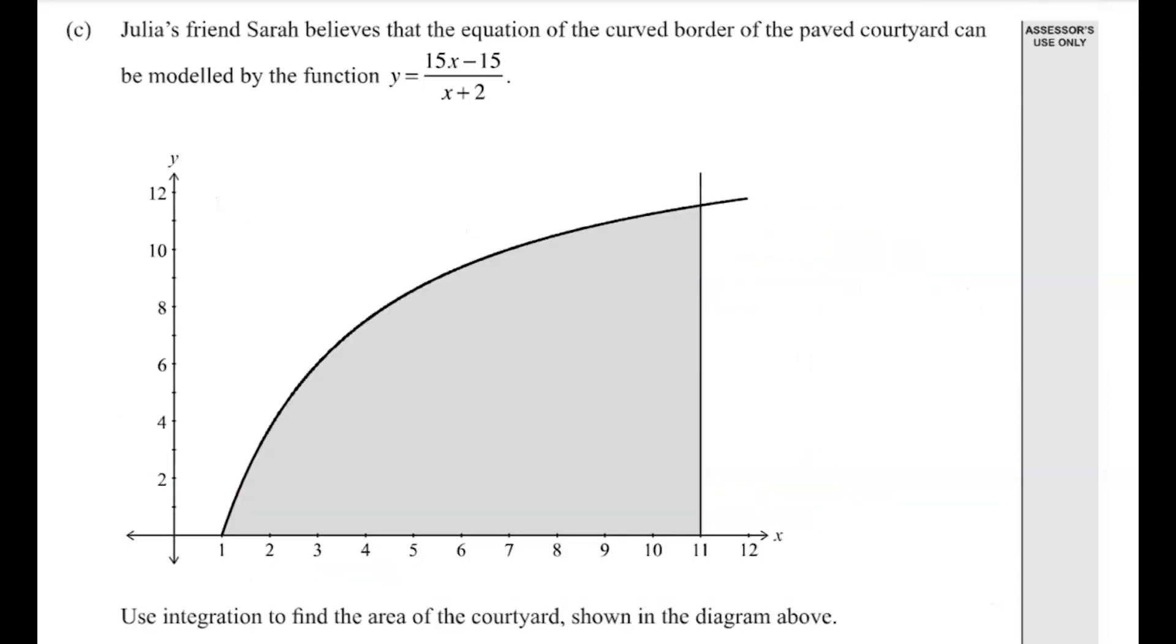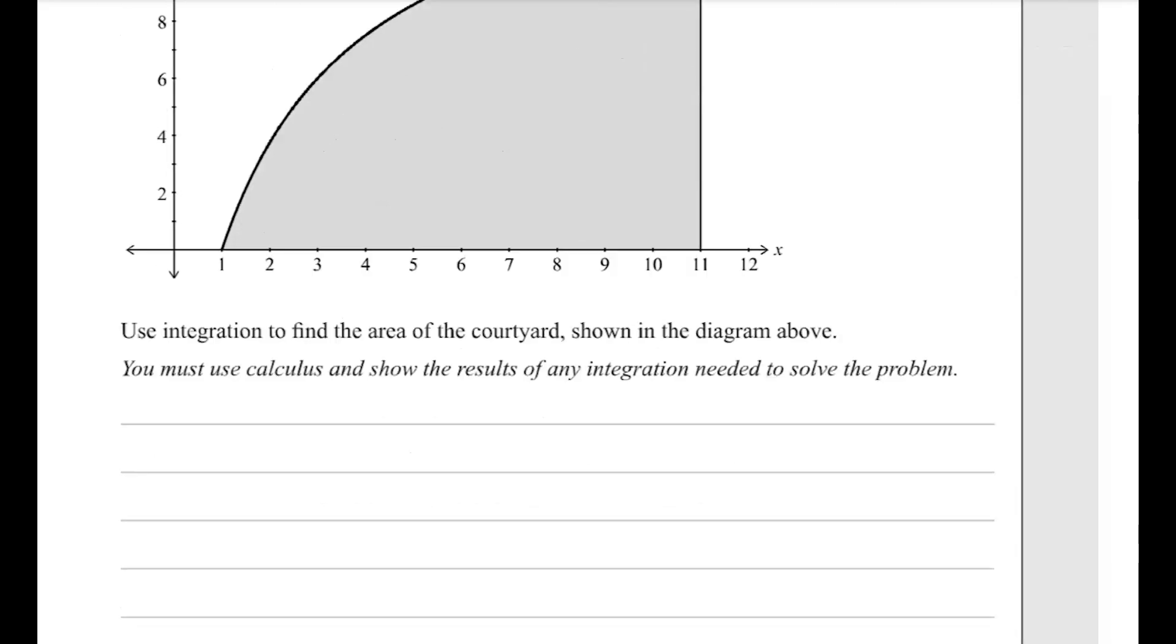We've got this curved border for part c, we want to find the area of this shaded region where y is equal to this equation we've been given. So we will integrate from 1 to 11 of that function. And the first thing to do is a little bit of algebraic juggling to get this into a, to change that fraction into something we can actually deal with, at the moment we can't integrate that. So on the top, if we put this in terms of something times the x plus 2 that's on the bottom,